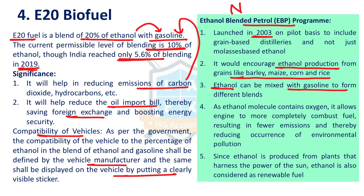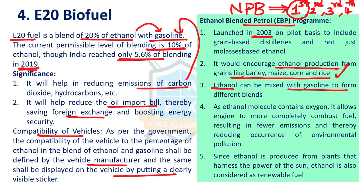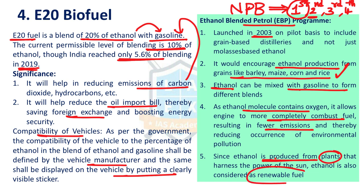Under the National Policy on Biofuels, there are different generations of biofuels. First generation biofuels use food materials like sugarcane, barley, and maize, which leads to food insecurity. Second generation biofuels use organic waste and bio-waste and are considered more viable. Ethanol molecules contain oxygen, which allows the engine to combust fuel completely, releasing fewer emissions — making ethanol a cleaner and renewable fuel. E20 means 20% ethanol blended with 80% petroleum; E40 would mean 40% ethanol and 60% petroleum.